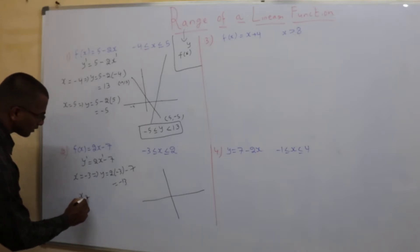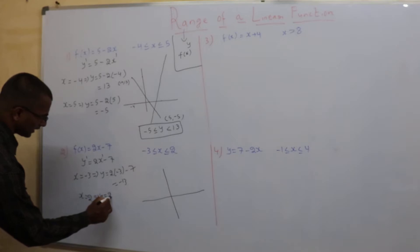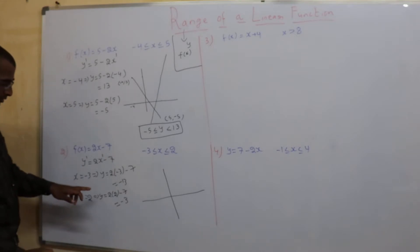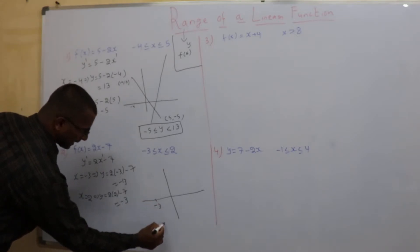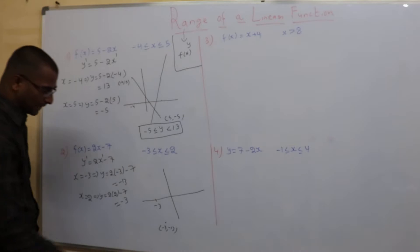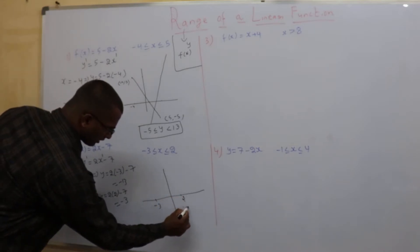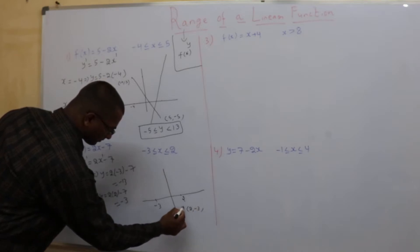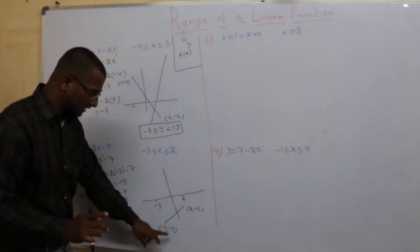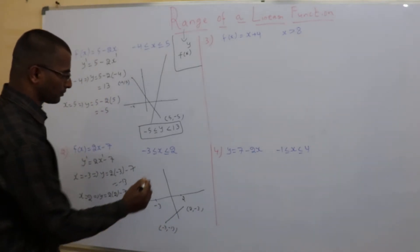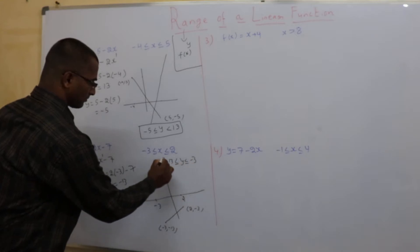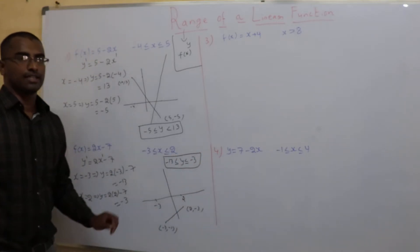And when x is 2, y = 2 times 2 minus 7, so 4 minus 7 is minus 3. When x is minus 3, y is minus 13 — let's say somewhere around here. When x is 2, y is minus 3 — somewhere around here. So for these values of x, y lies between minus 13 and minus 3. My answer is: minus 13 ≤ y ≤ minus 3 is the range.